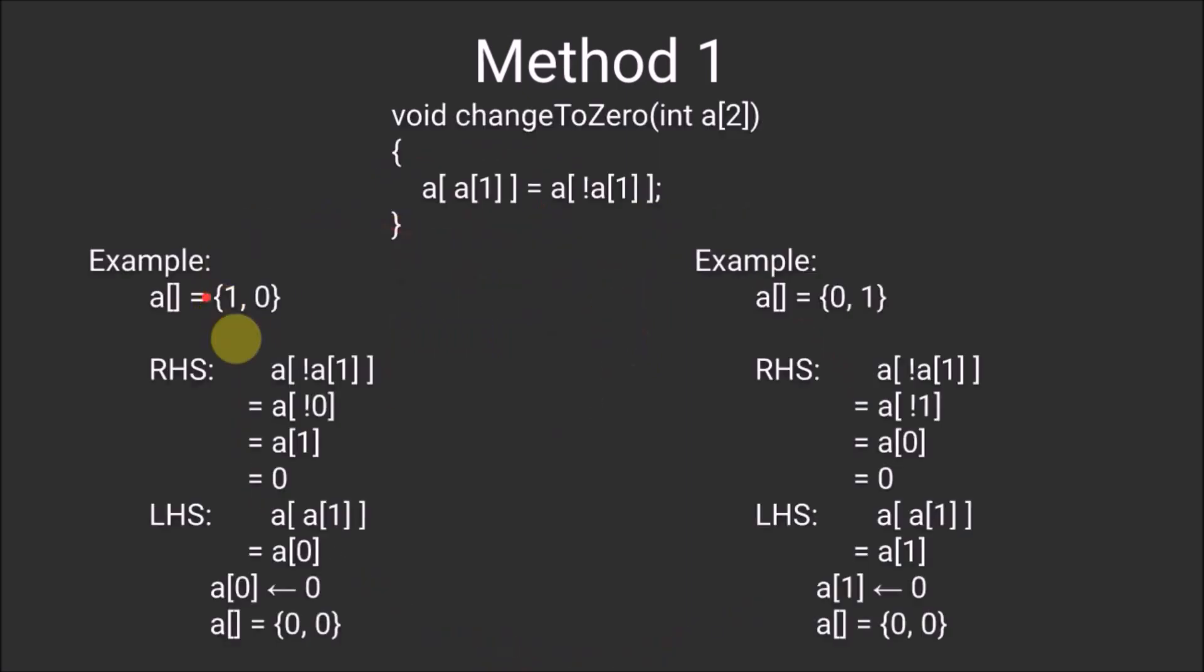In the first example, we have the array as 1 and 0. The RHS will be the value of A[1] here is 0. Therefore, we substitute A[1] with 0. Then we do a complement of 0 which is 1. The value of A[1] will be 0. Therefore, RHS will be equal to 0.